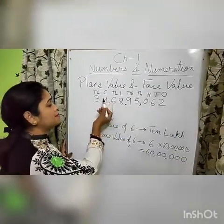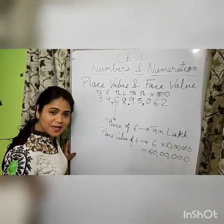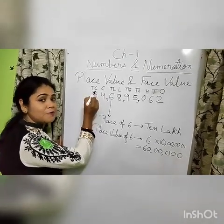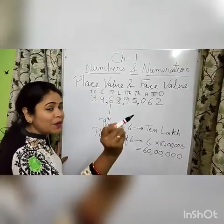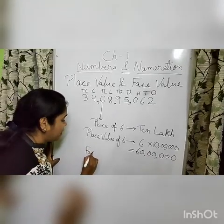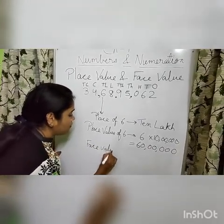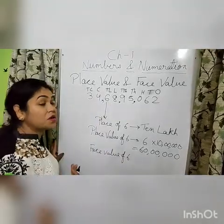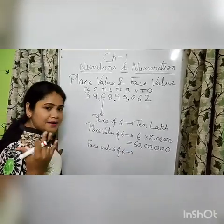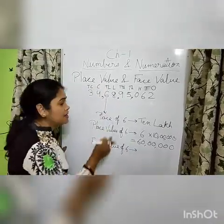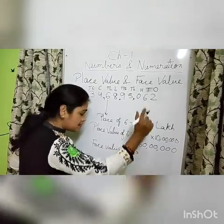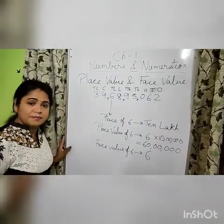So if somebody is asking what is the place value of four, four is the digit and its place is crore, so its place value is 4 crore — that is 4 multiplied by crore. Now, face value. Face value of six: if somebody is asking what is the face value of this digit, you will say face value is the number itself. We do not consider which place it is in. Its face value is always 6.